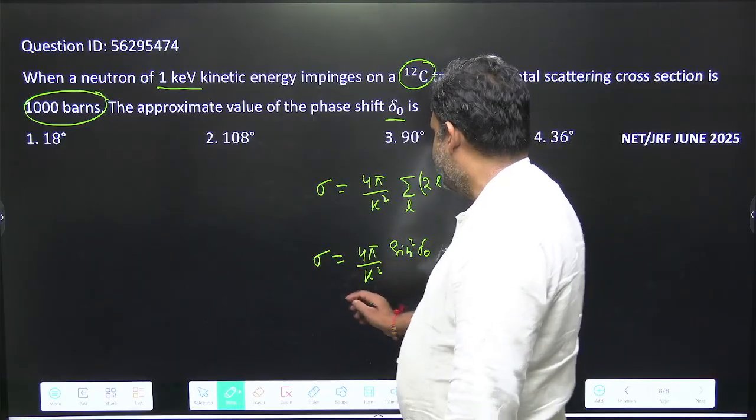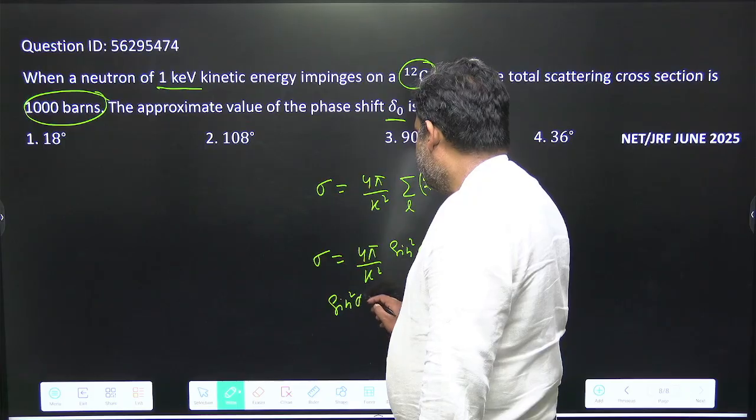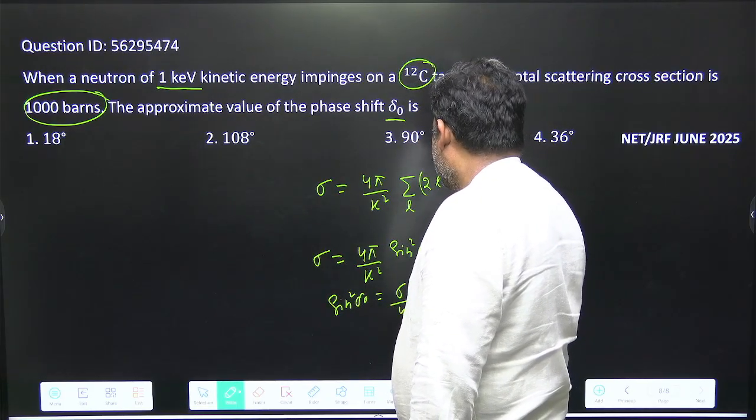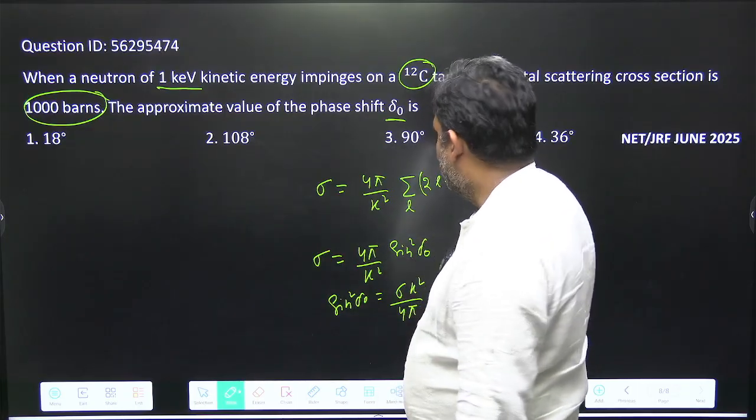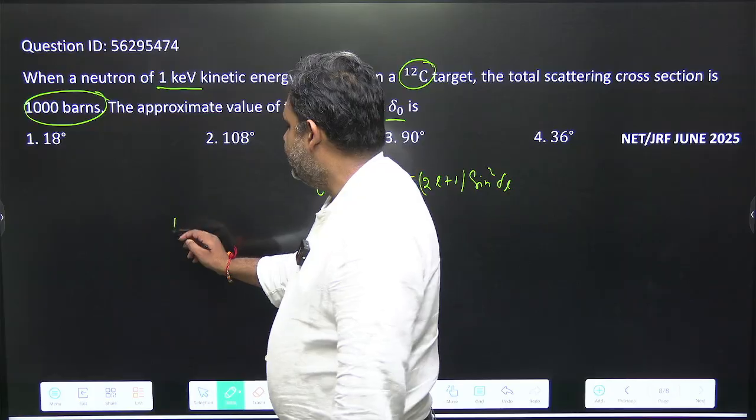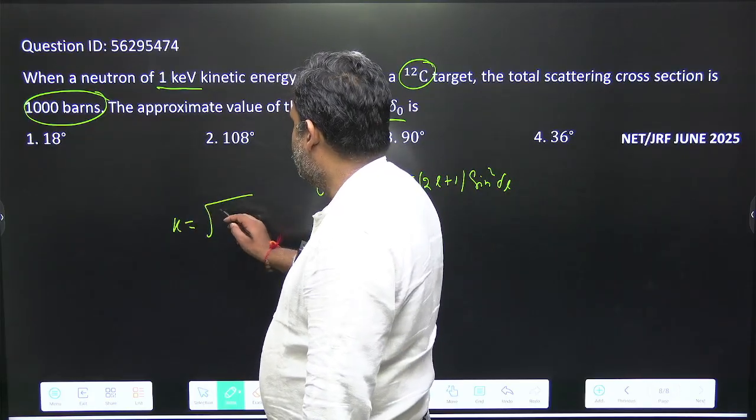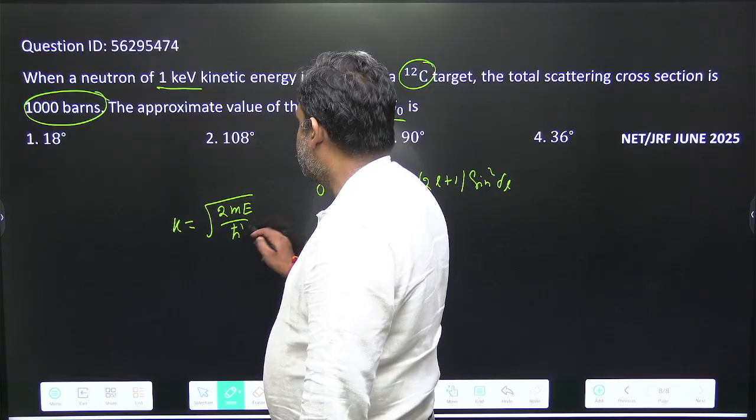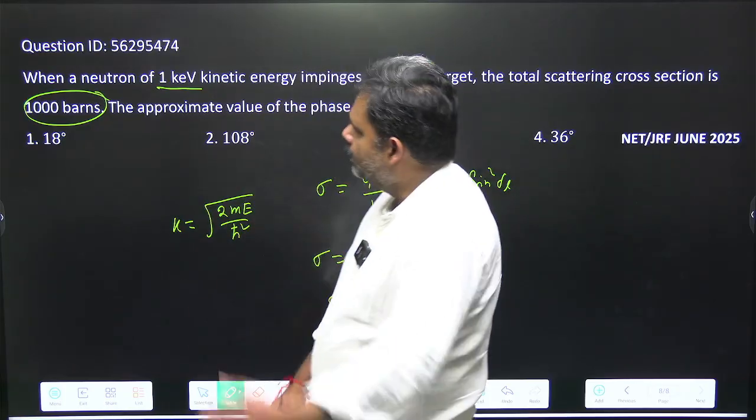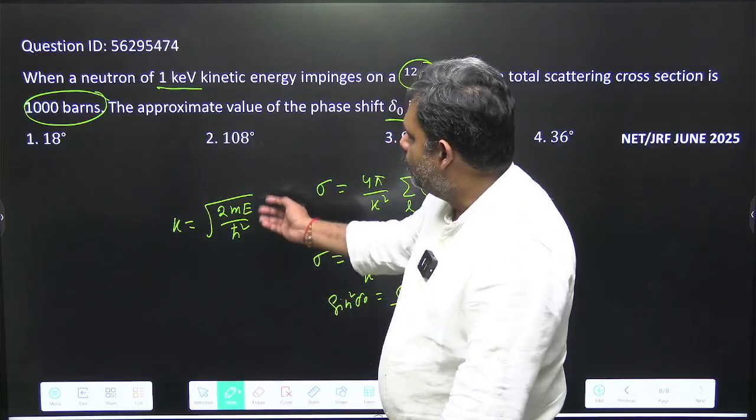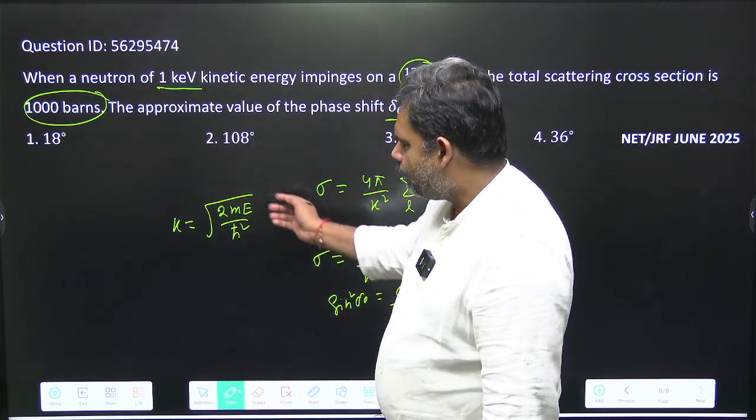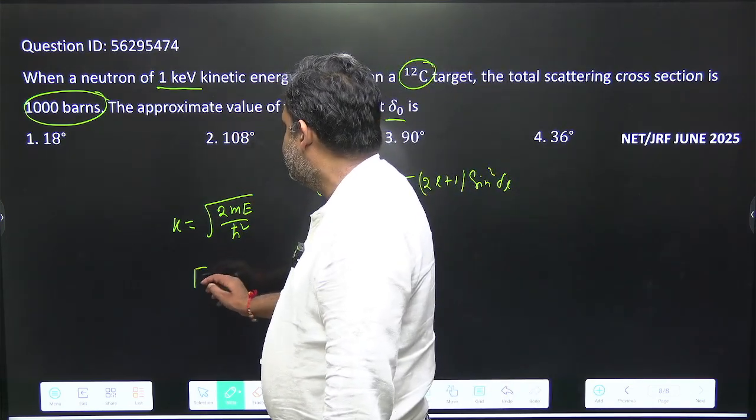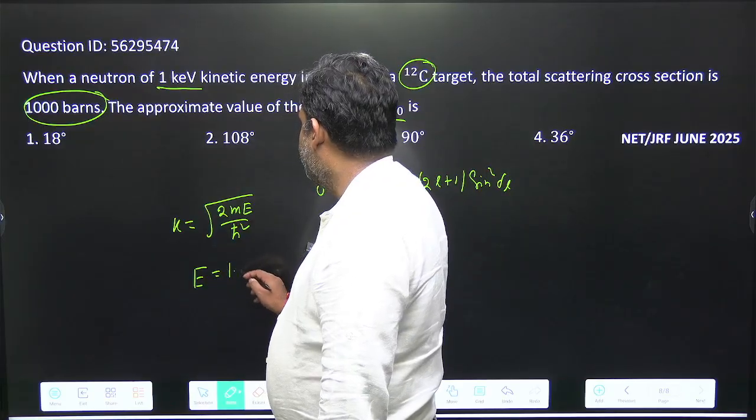We can find the value of sin²δ₀ = σk²/4π. And we have k = √(2mE)/ℏ. This is the value of k because it is just a free particle. m is the mass of neutron and E is the energy.